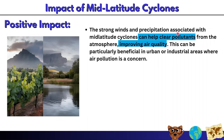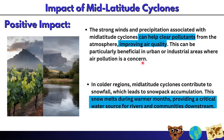Strong winds and precipitation from mid-latitude cyclones help clear pollutants from the atmosphere, improving air quality — particularly beneficial in urban or industrial areas. For example, strong winds can blow toxic gases away from factory areas, providing clean fresh air. In colder regions, mid-latitude cyclones contribute to snowfall and snowpack accumulation. When snow melts during warmer months, it provides a critical water source for rivers and communities downstream, filling dams and waterways.